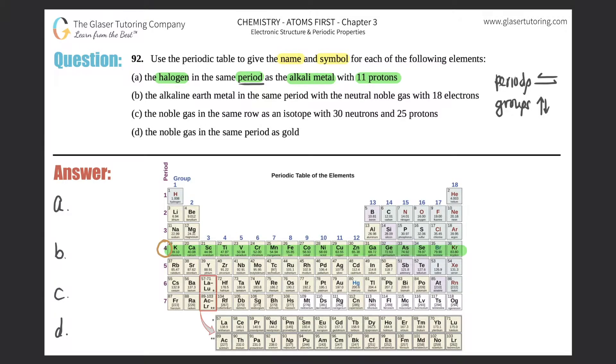This whole column would be classified as group number 13 because it goes up and down. They want to know what halogen is in the same period, going from left to right, with the alkali metal with 11 protons. Where's the halogen group? Halogens are always group 17, the second to last group. That starts with fluorine and goes all the way down to astatine.